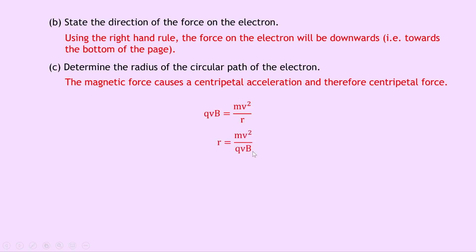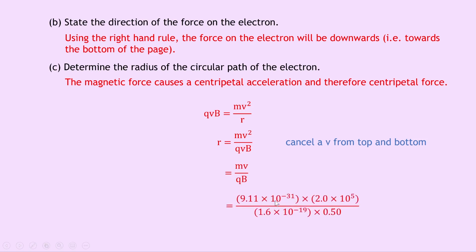Rearranging for the radius R, we swap R with the QVB term to get R equals mv squared over QVB. We have v squared on top and v on the bottom, so cancelling gives R equals mv over QVB. Substituting in the numbers: 9.11 times 10 to the minus 31 (the electron mass from the datasheet), times 2.0 times 10 to the 5 meters per second, divided by 1.6 times 10 to the minus 19 times 0.5. Putting all of that into your calculator gives a final answer of 2.3 times 10 to the minus 6 meters.